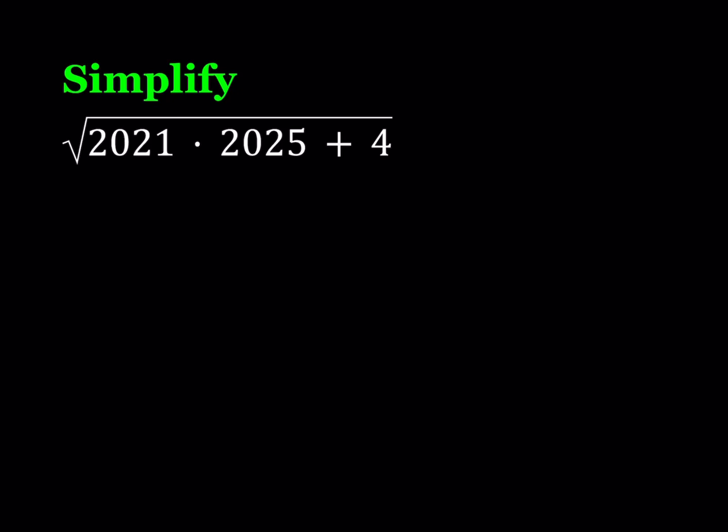Hello everyone. In this video we're going to be simplifying a radical expression. We have the square root of 2021 times 2025 plus 4 and we're going to write this expression in the simplest form.